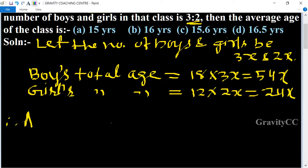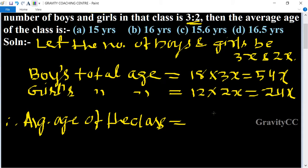Sum of ages of girls and boys, 54x plus 24x, upon number of boys and girls, 3x plus 2x, equal to 78x upon 5x.